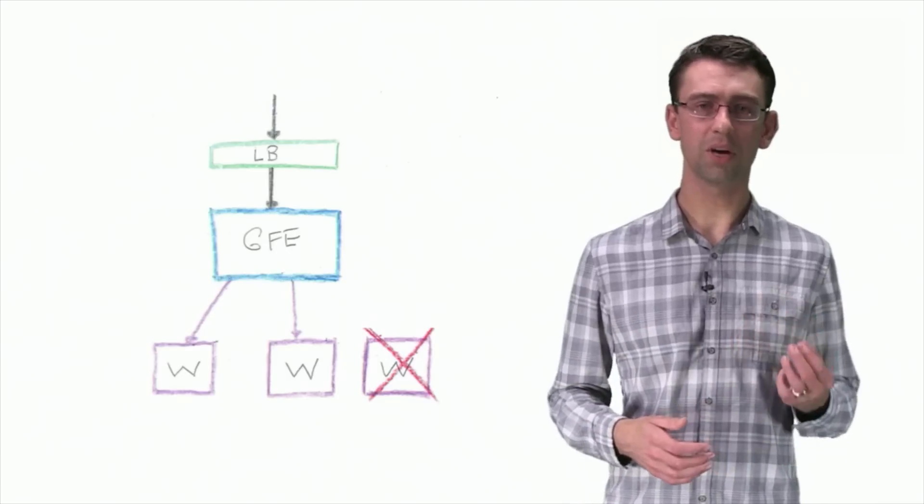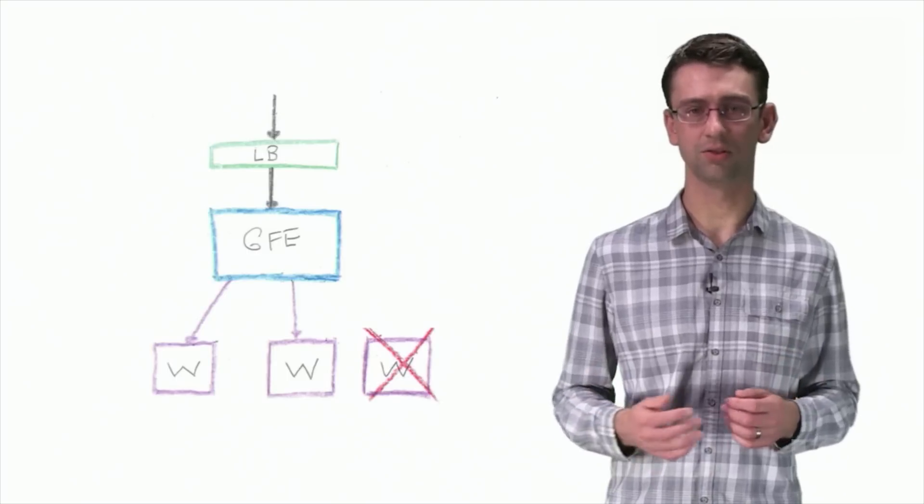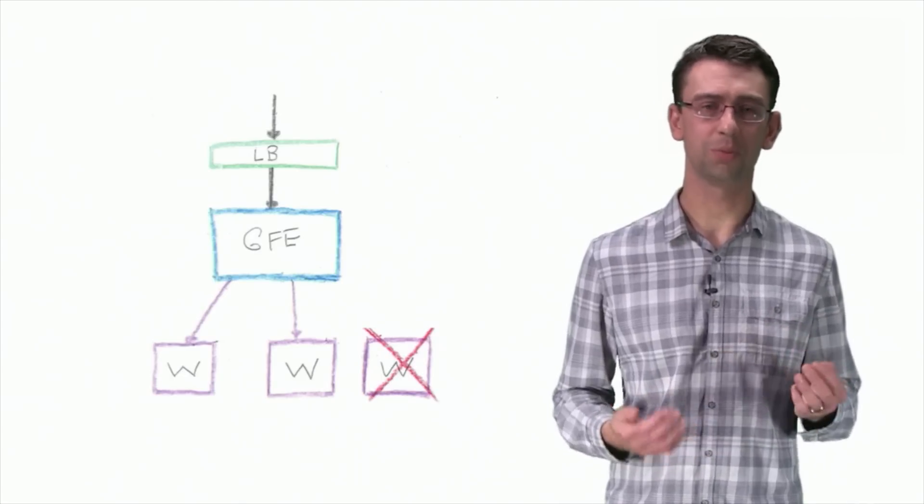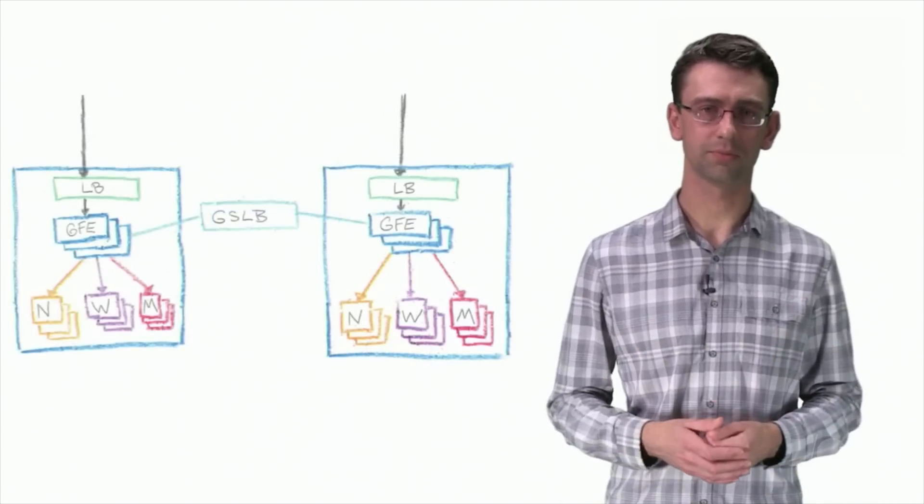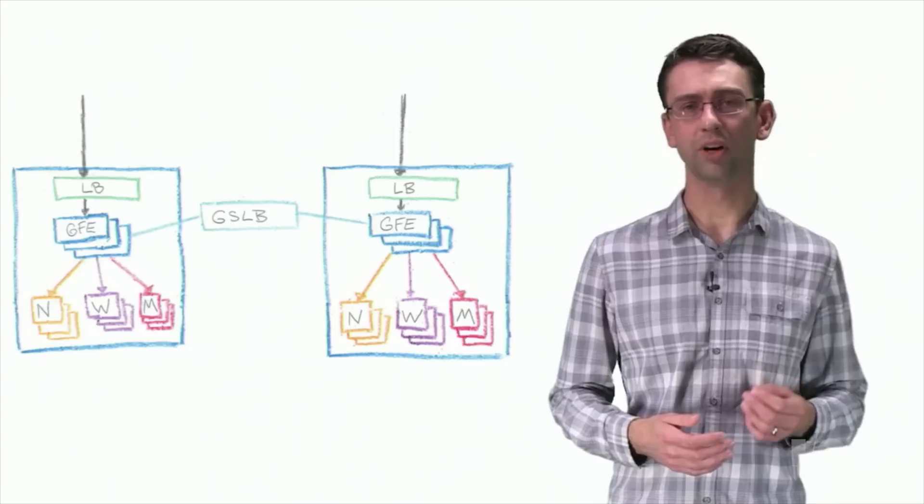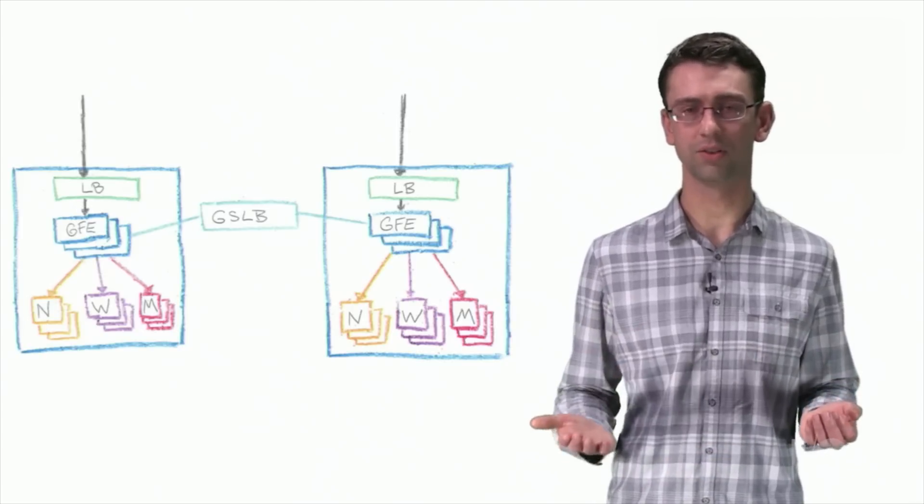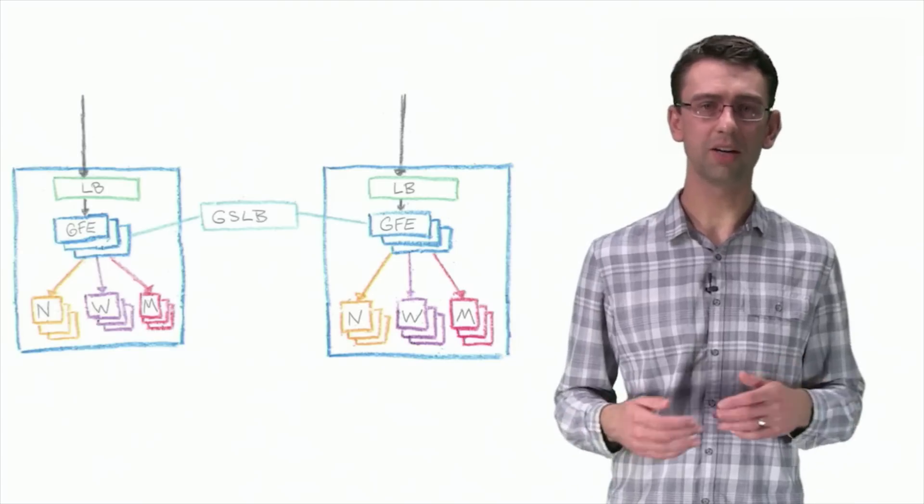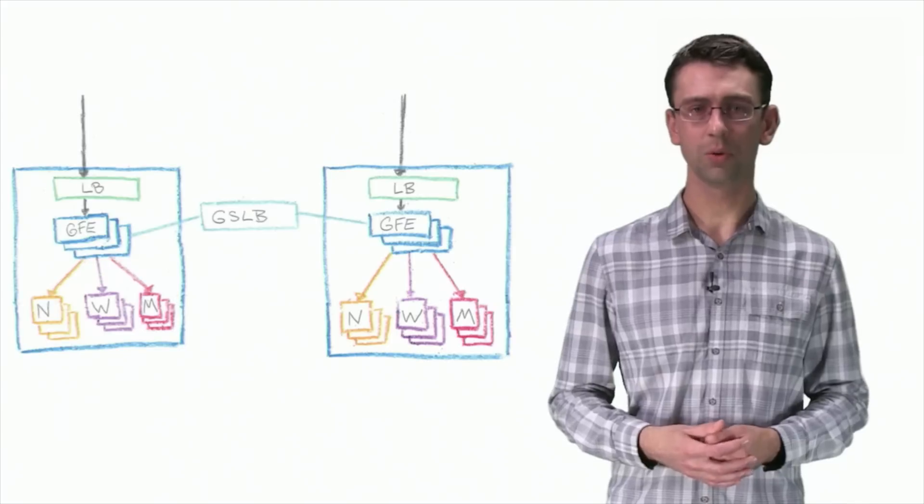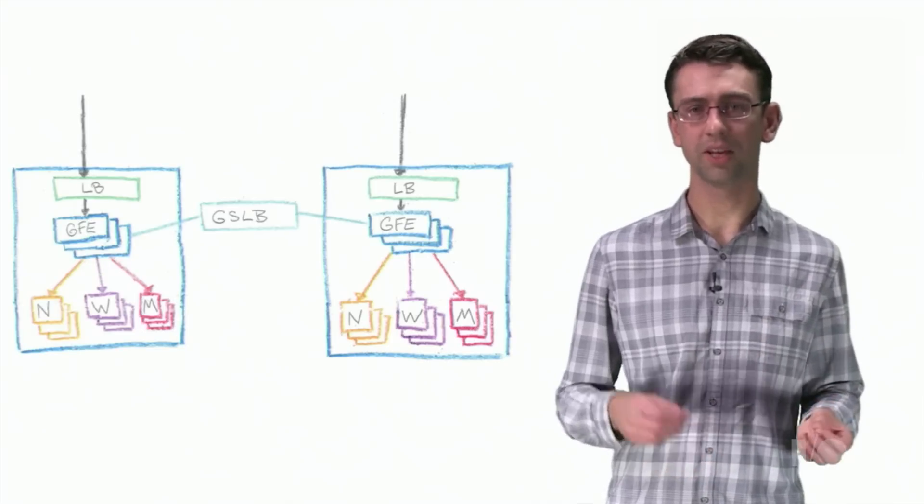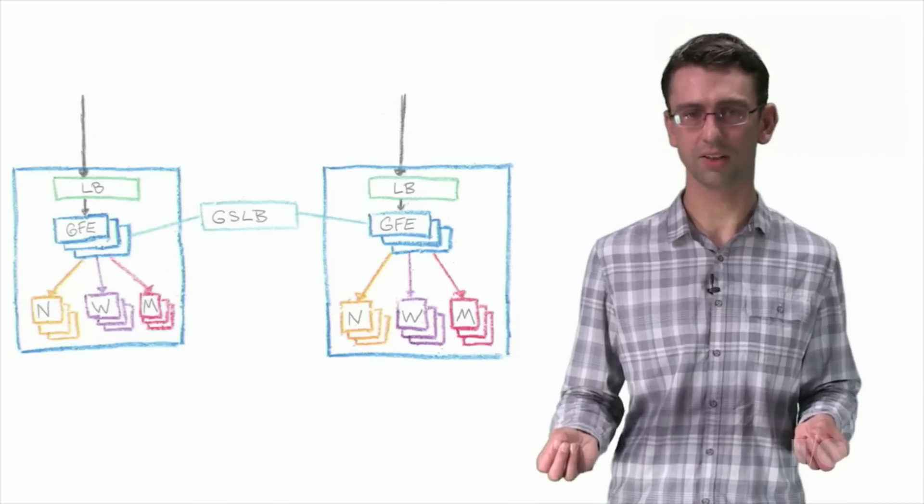The GFEs also maintain persistent TCP connections to their back-ends, so the connections are ready to use as soon as the request arrives. This also helps us reduce latency for our users. At this point, we required the ability to serve users from a different data center to the ones the GFEs were running in. During maintenance windows or failure scenarios, we want to continue terminating the client's TCP connections at the local GFE, but then use a back-end service in an adjacent data center.